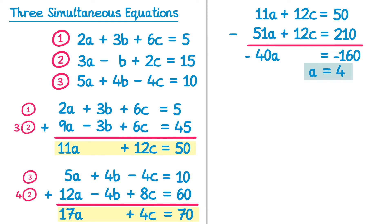We now substitute a back into one of these two equations, I'll go for the top one since it has smaller numbers. So 11 times a, so 11 times 4, plus 12c equals 50. 11 times 4 is 44, and then we subtract 44 from both sides, we'll get 12c equals 6, in which case c equals a half, 0.5.